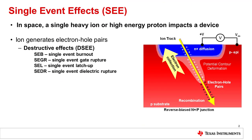A single event occurs when a single heavy ion or high-energy proton impacts the device. This ion will create a trail of electron pairs which can be swept up into the electronic field of the device. A heavy ion strike can cause many different types of effects.